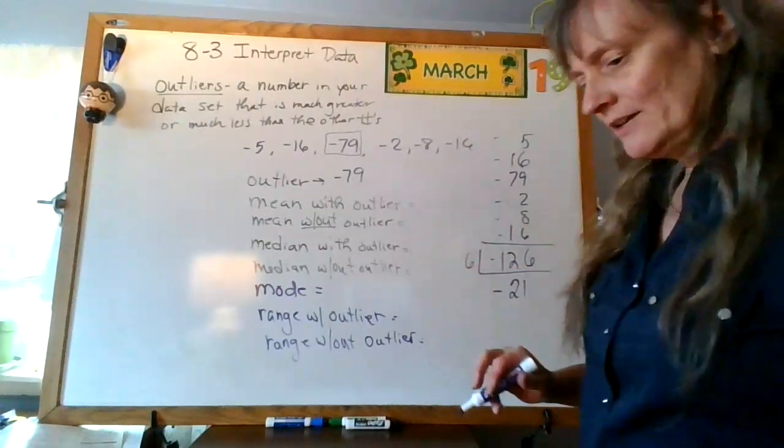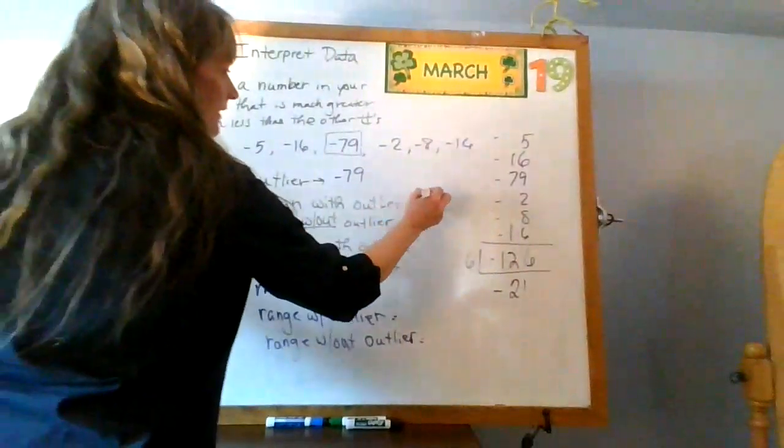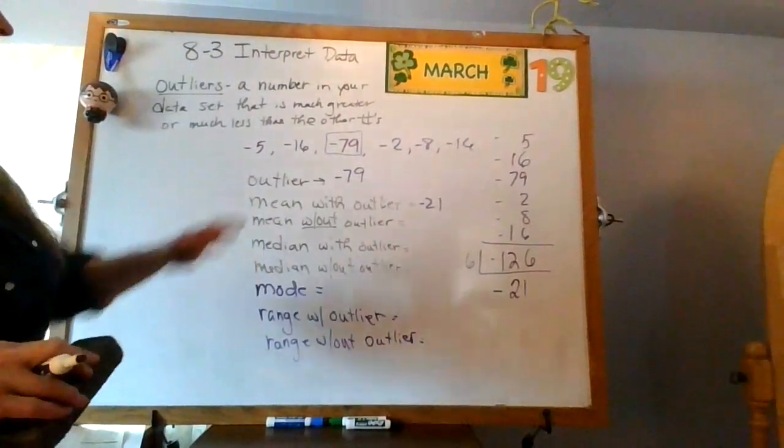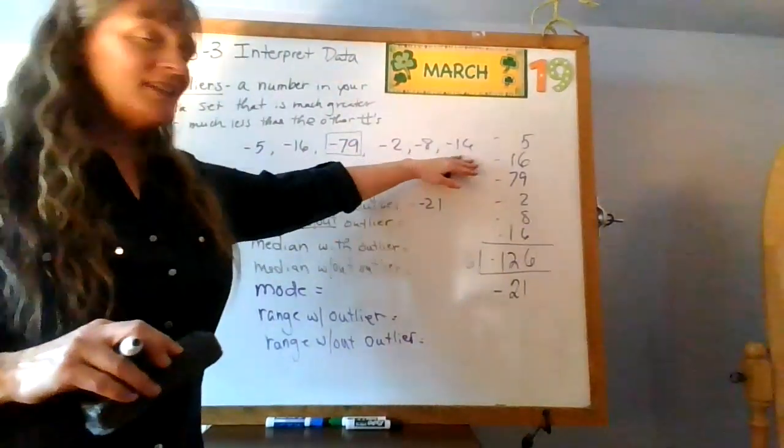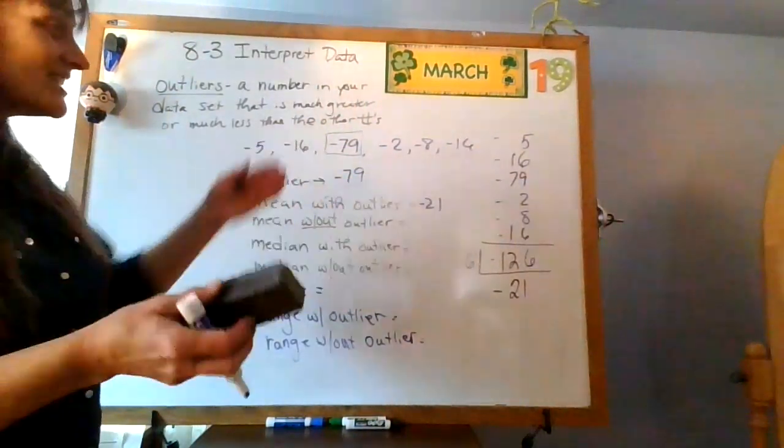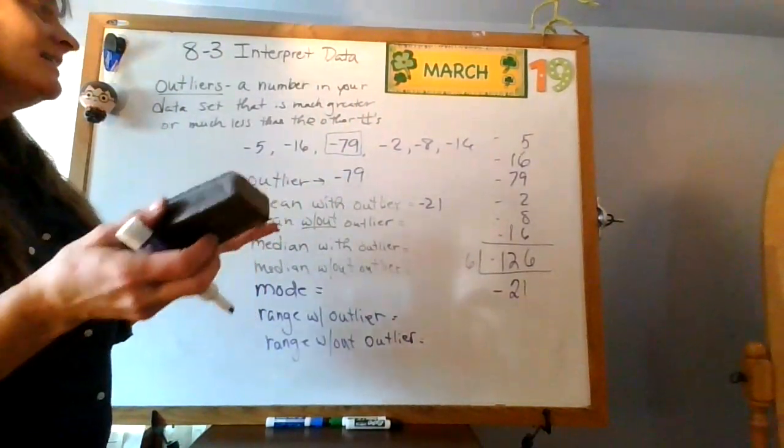So my mean with my outlier is negative, with my outlier, yeah, is negative 21. Again, I look at these, none of these are even close to negative 21. I mean, negative 16 is getting a little closer, but it's big.